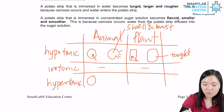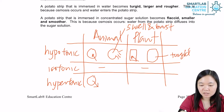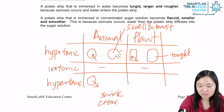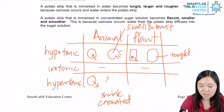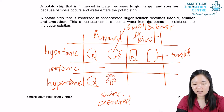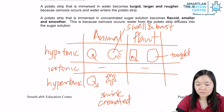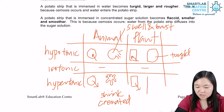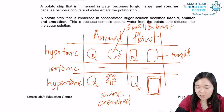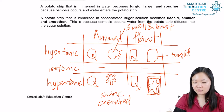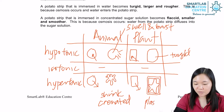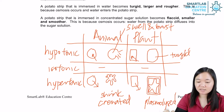In a hypertonic solution, water will be drawn away from the cell. So the cell membrane starts to shrink, the cell itself shrinks and it becomes crenated. Crenated means it has spikes. For plant cells in hypertonic solution, when water is drawn from it, the cell membrane retracts away from the cell wall. This state is known as plasmolysis — the process is known as plasmolysis.